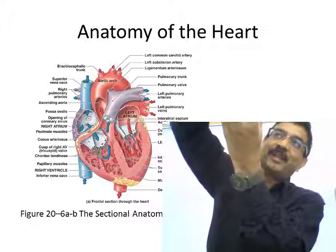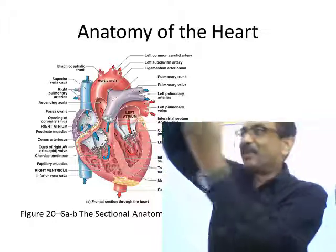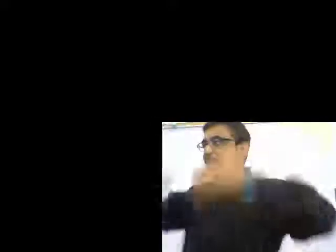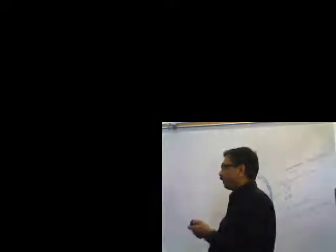The atrium sends blood to the ventricle just sitting under it. The ventricle sends blood to the body or to the lung. The right ventricle sends deoxygenated blood to the lungs, and the left ventricle sends oxygenated blood throughout the body. Because the left ventricle sends blood far — throughout the entire body — the left ventricle wall is much thicker than the right ventricle wall.